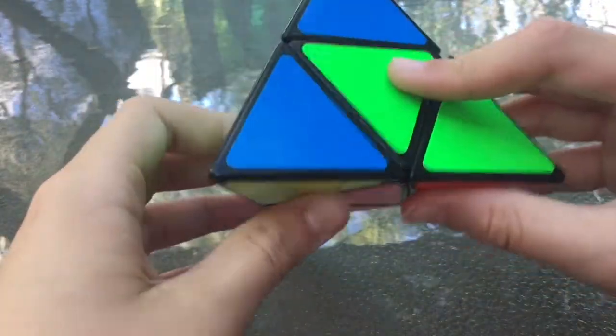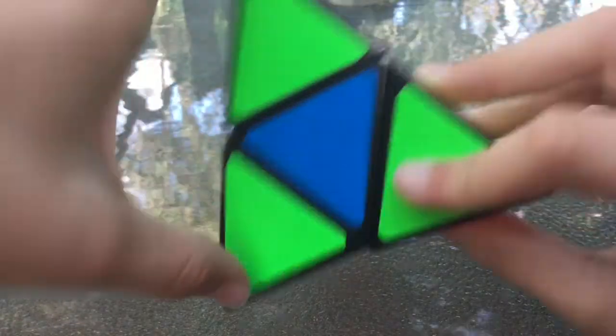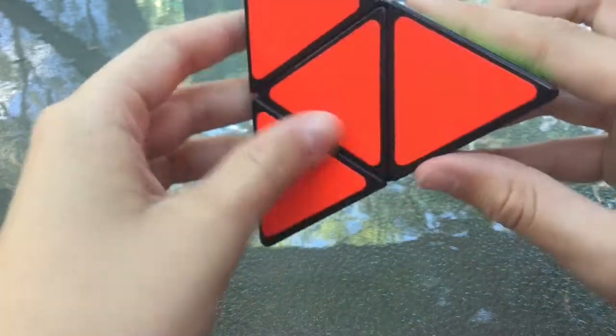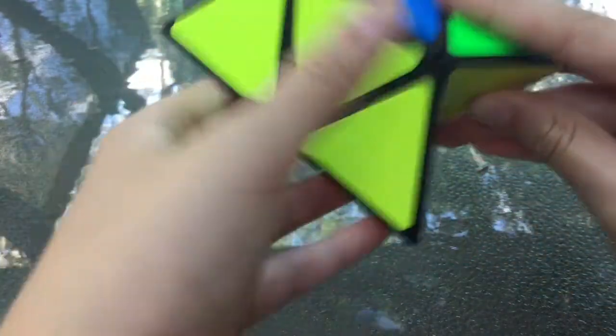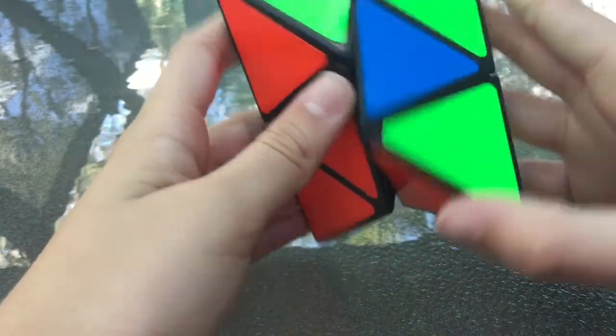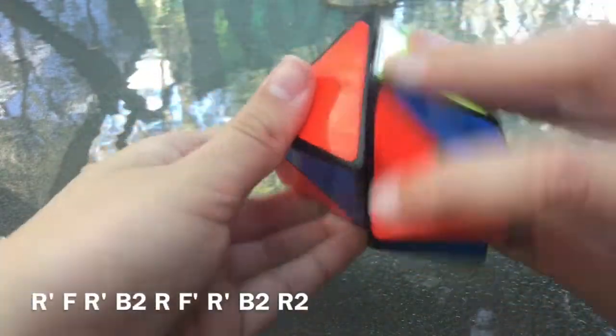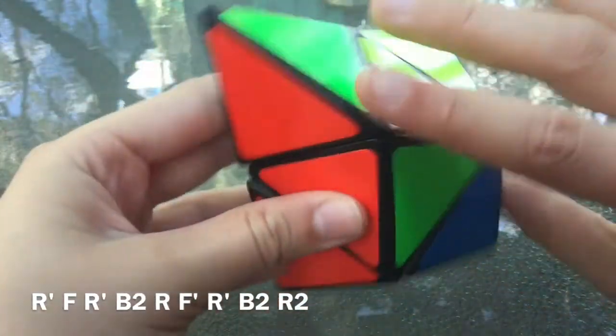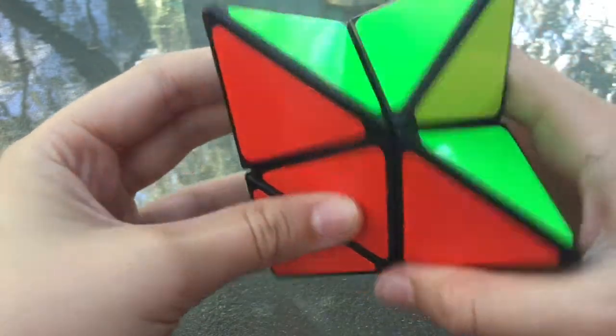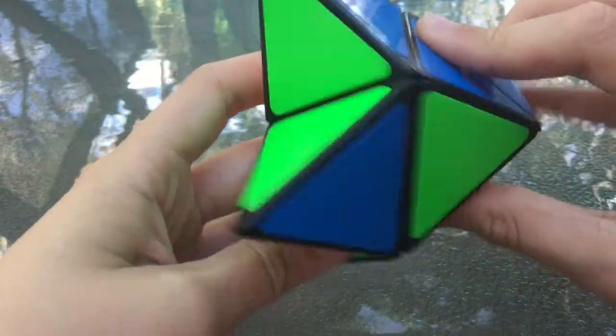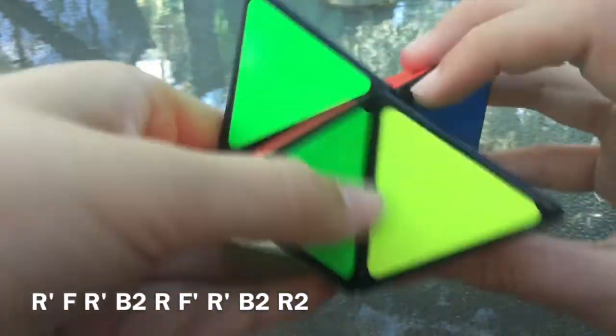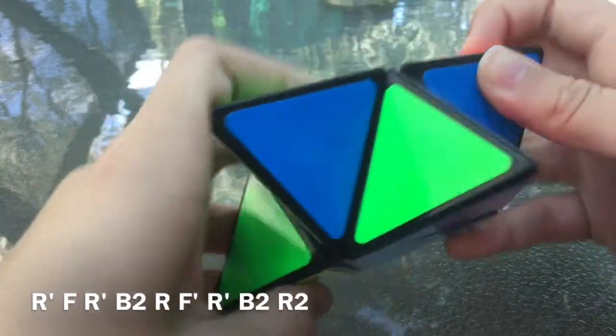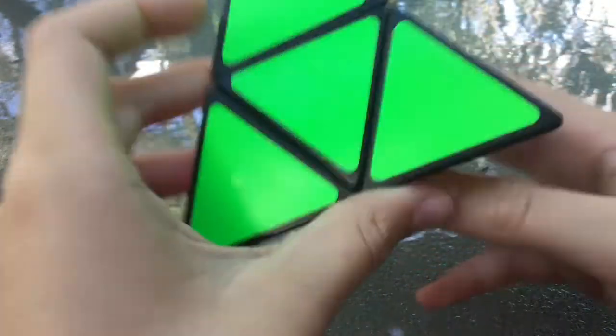You might also get it so you align that. And both of them can be aligned at the same time, but these two are in the wrong place. What you do, you just make sure that this is on the bottom. And you do right inverted, front, right inverted, back two, right, front inverted, right inverted, back two, right two. And align it.